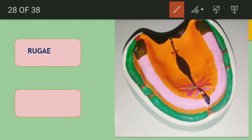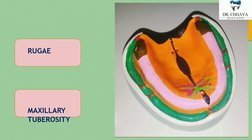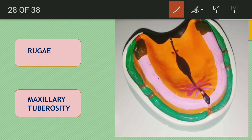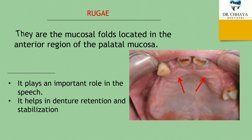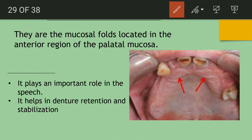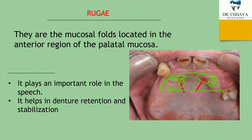In the cast, this pink elevation is called rugae, and this brown bulbous area is the maxillary tuberosity. Rugae are the mucosal folds located in the anterior region of the palatal mucosa. These elevations on the anterior part of the palate are the rugae.